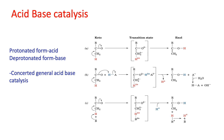Acid-base catalysis: you all know acid is a proton donor and base is a proton acceptor as per the Bronsted concept. The amino acid residues present in the active site of the enzyme can act as acid or base — in the protonated form they act as acid, and in the deprotonated form as base.